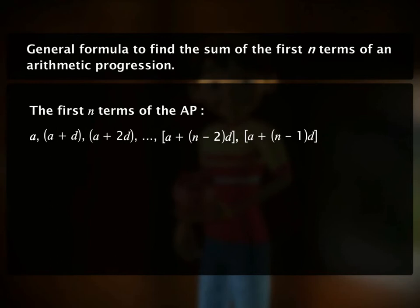We write the sum of the first n terms of this arithmetic progression as a plus (a plus d) plus (a plus 2d) and so on plus a plus (n minus 2) times d plus a plus (n minus 1) times d.